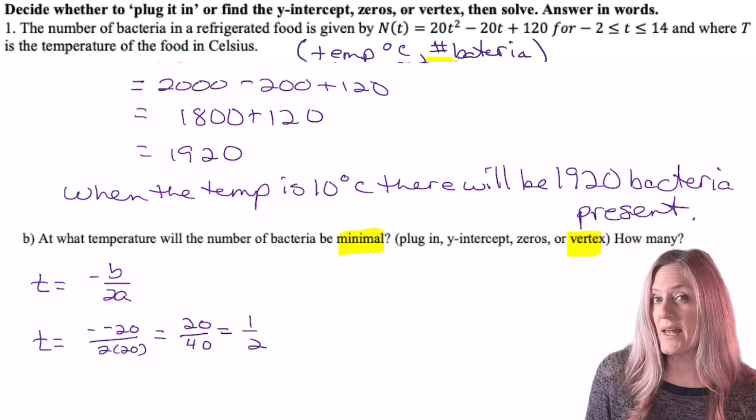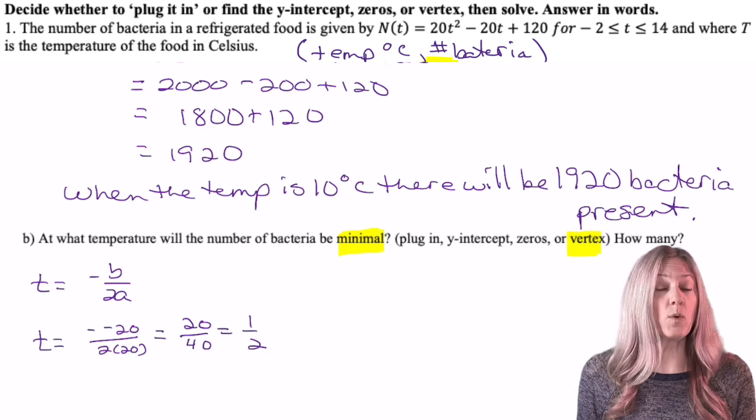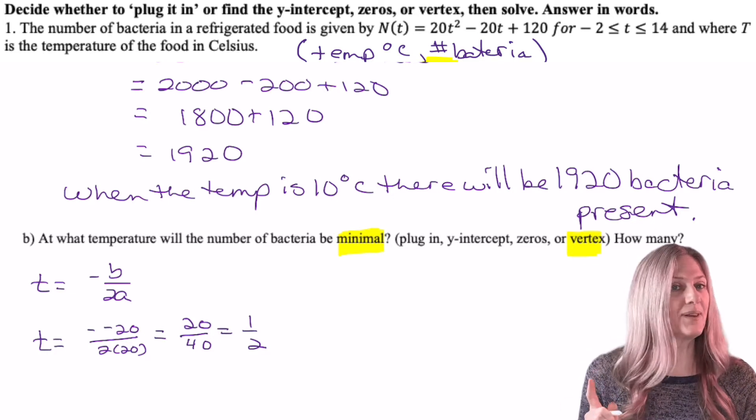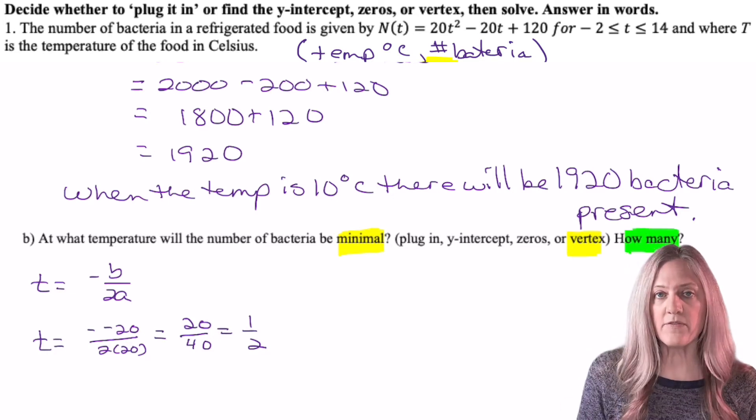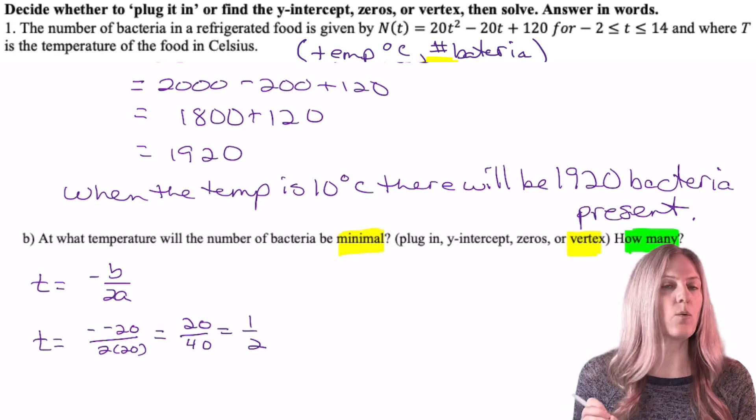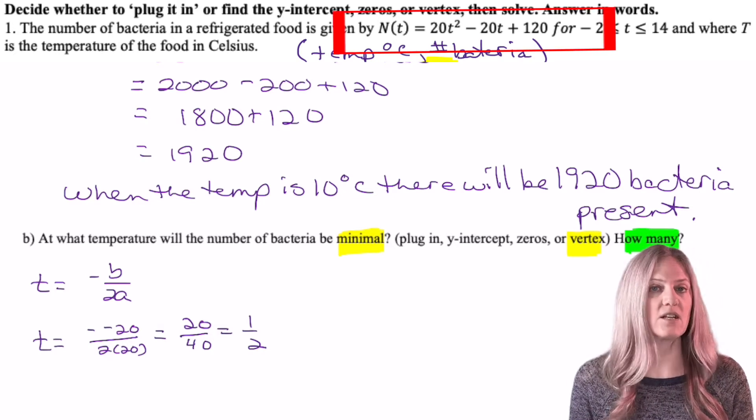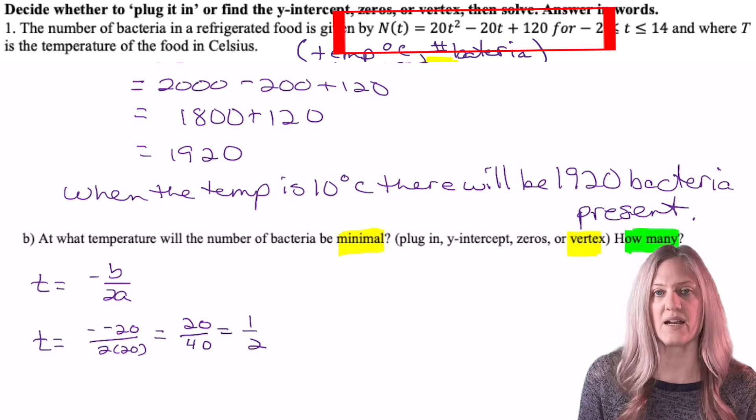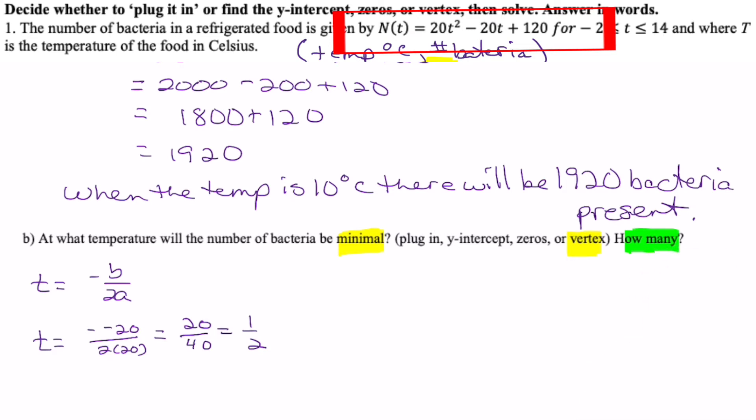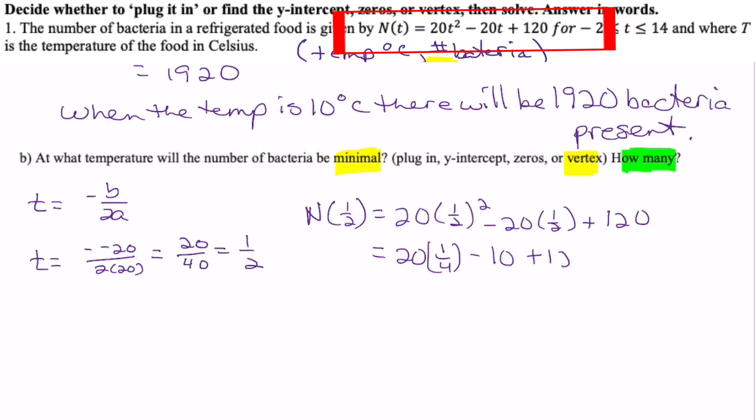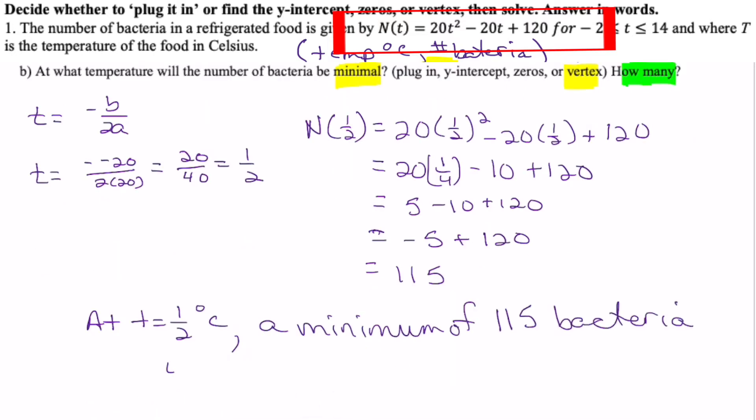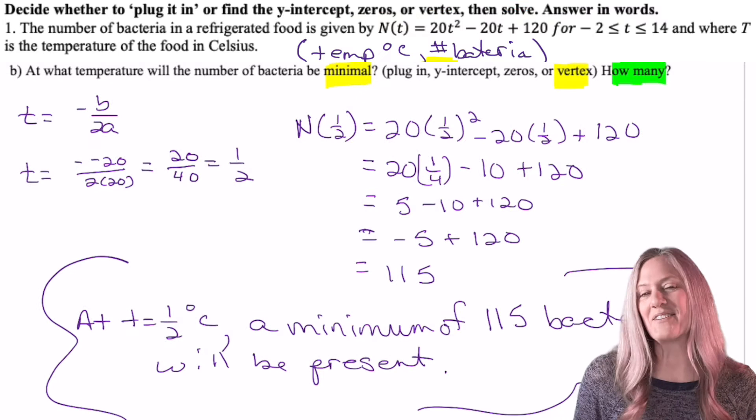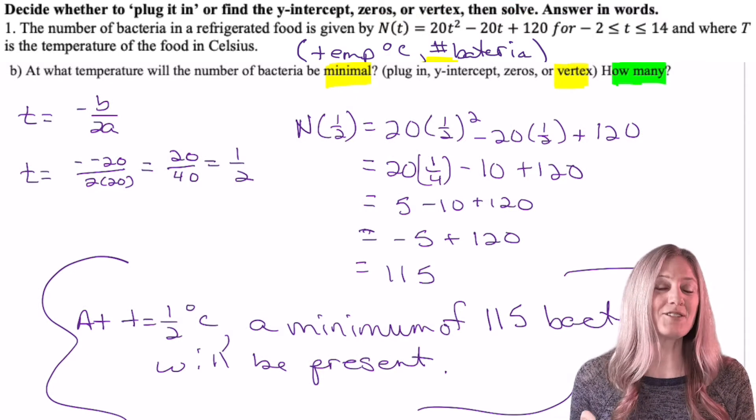Then it asks, how many? Well, in order to get how many, what do I need to do? Plug it in. We're still working with the vertex, but I need to now plug in that one-half degrees Celsius into the equation and find out the number of bacteria at a minimum. Remember, let's give it some context. At t equals one-half degrees Celsius, there will be a minimum of 115 bacteria present.